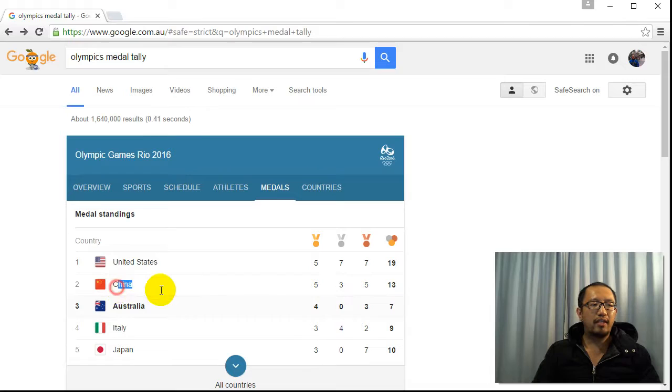So for example, China is second on the list, but China has close to 1.4 billion people. So when you have that many people, it's sort of a bit of an advantage because you have more people to choose from, and sport has a lot to do with a bit of natural ability as well.